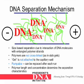The DNA separation mechanism is a size-based separation due to the interaction of DNA molecules with entangled polymer strands. The polymers are not cross-linked as in slab gels, and the gel is not attached to the capillary wall. The gel is pumpable, which means it can be replaced after each run, and the polymer length and concentration determine the separation characteristics.